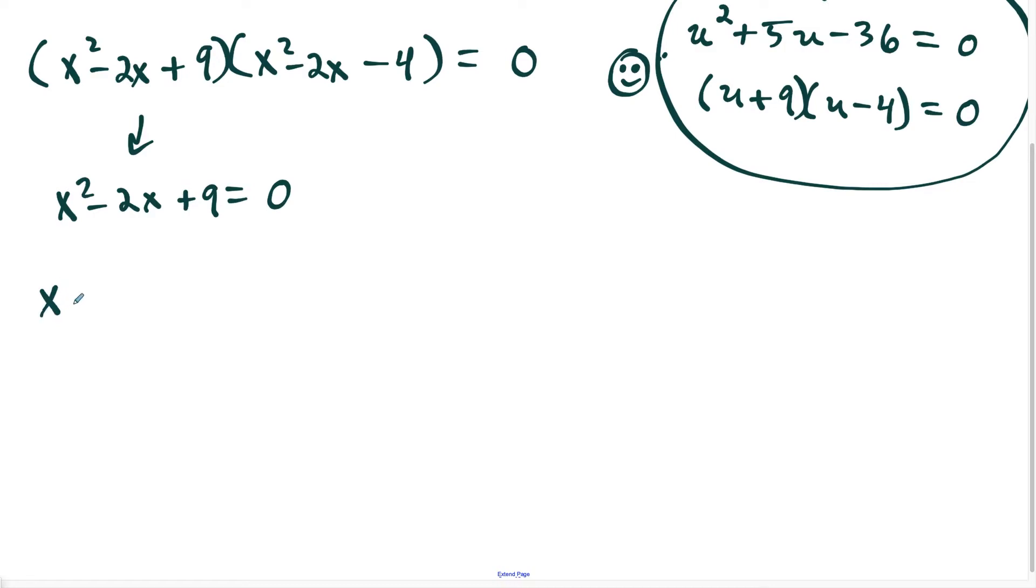So this is going to give us x equals negative b. Our b term here is negative 2. So we're going to have 2 plus or minus the square root of, and anytime your b term is negative, it's always good to write it in parentheses so you don't make a sign error underneath the radical. But I have minus 4 times a times c, so just writing the coefficients in place, all divided by 2 times a.